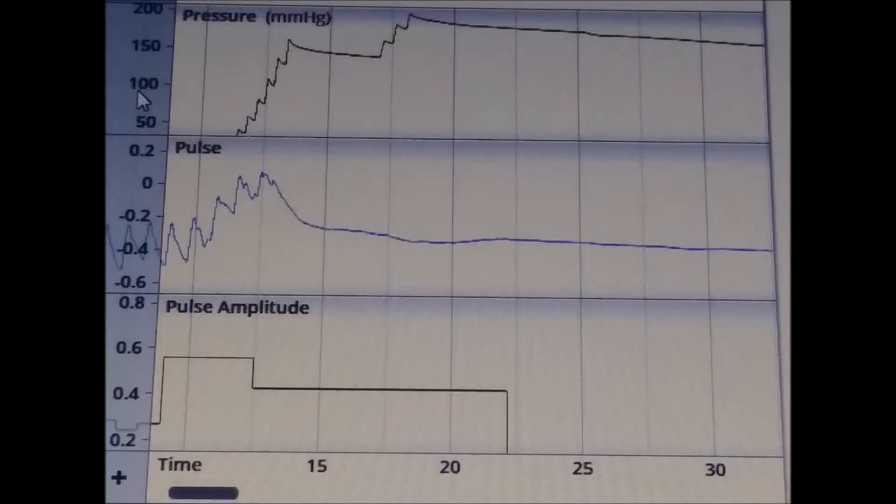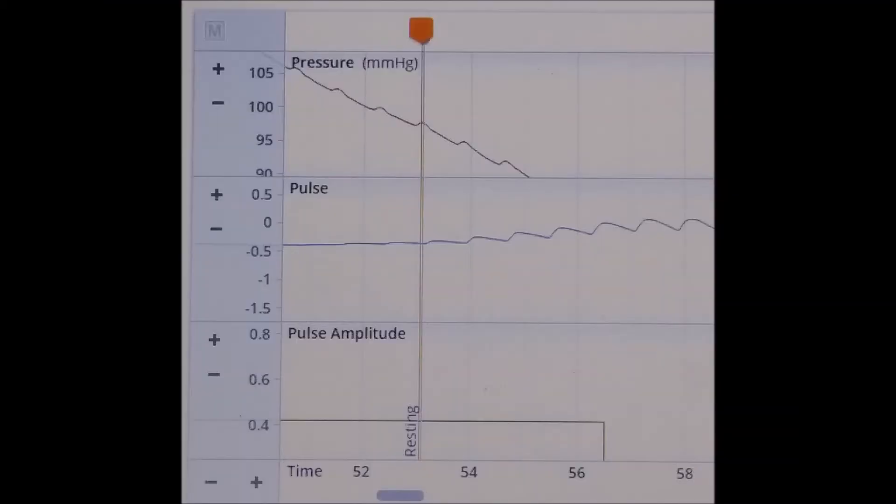Have patient begin in a resting position. Press start and inflate the blood pressure cuff until it is above the systolic pressure. At this time, you should notice that the trace in the pulse window goes flat. Keep deflating the blood pressure cuff until the signal in the pulse window is regained. Reappearance of the pulse signal signifies the systolic pressure. Use the marker tool and follow the vertical line to find the corresponding systolic pressure.